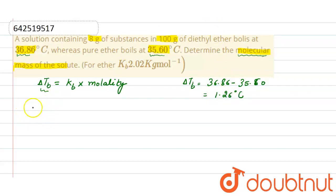Now put the values in the formula. 1.26 equals Kb, which is given as 2.02, times molality, which is weight of solute, 8 grams.